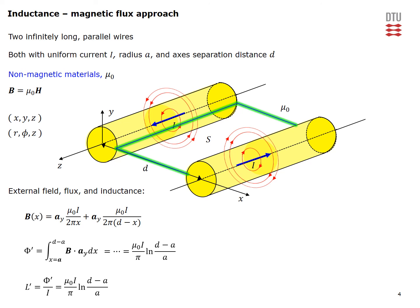If we divide this flux with the current we arrive finally at the expression for the external inductance of our two wire transmission line.